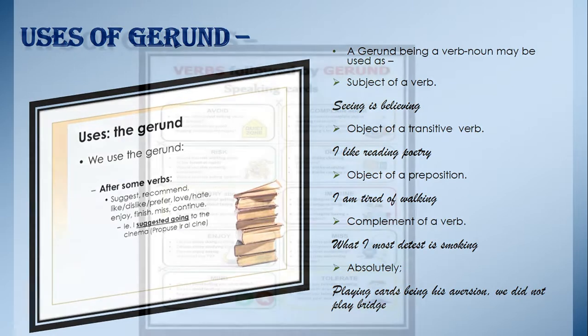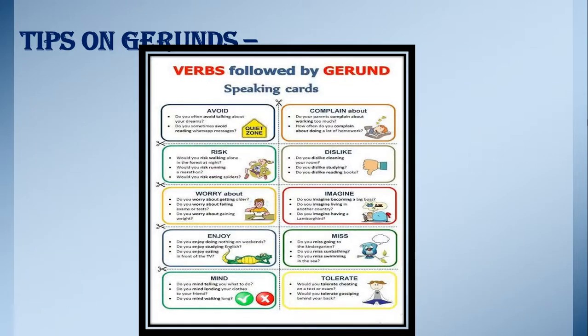Fifth, the gerund can be used as an absolute. For example: 'Playing cards being his aversion, we did not play bridge.' I've also given you some speaking cards which you can go through on your own to understand exactly how verbs are followed by a gerund.